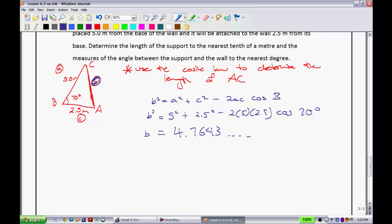So now what I've been able to do, right, is I've been able to find that side. So now I have a full ratio here, right? Because I'm looking for what is the angle between the support and the wall to nearest degree. That means I'm actually looking for this angle, A right there. So I'll make myself a little bit of a note here.